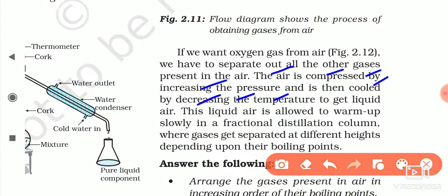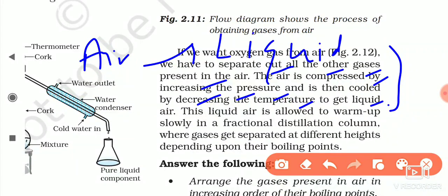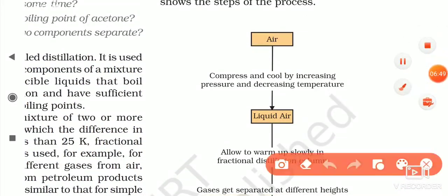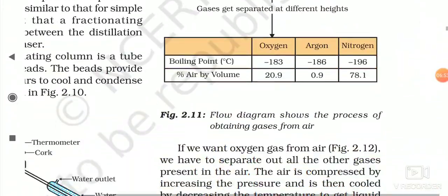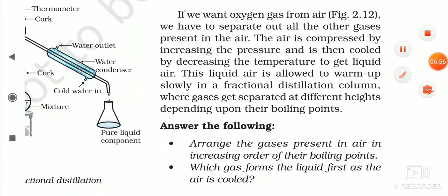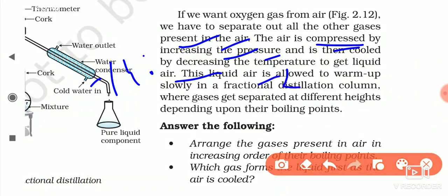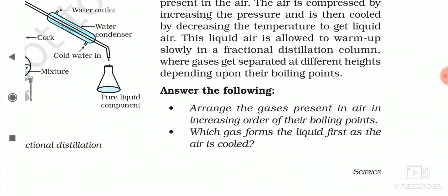Air is compressed by increasing the pressure and then cooled by decreasing the temperature to convert it into liquid. We compress and cool air to approximately minus 140°C to minus 200°C. This liquid air is then allowed to warm up slowly in a fractional distillation column, where gases get separated at different heights depending upon their boiling point.